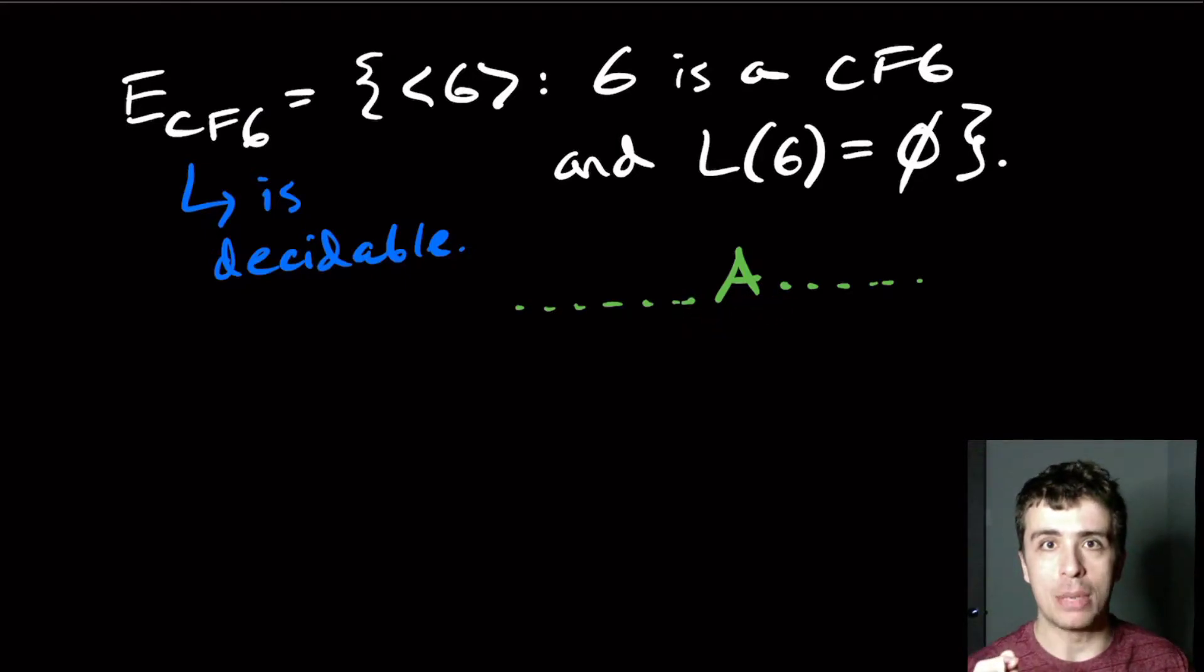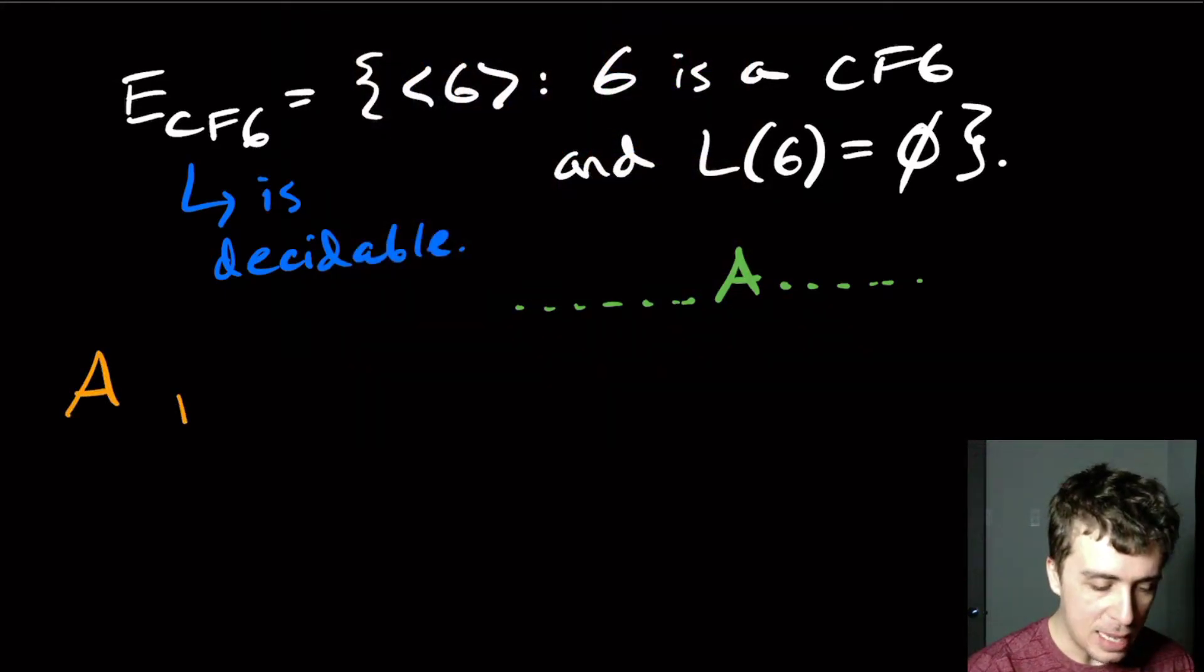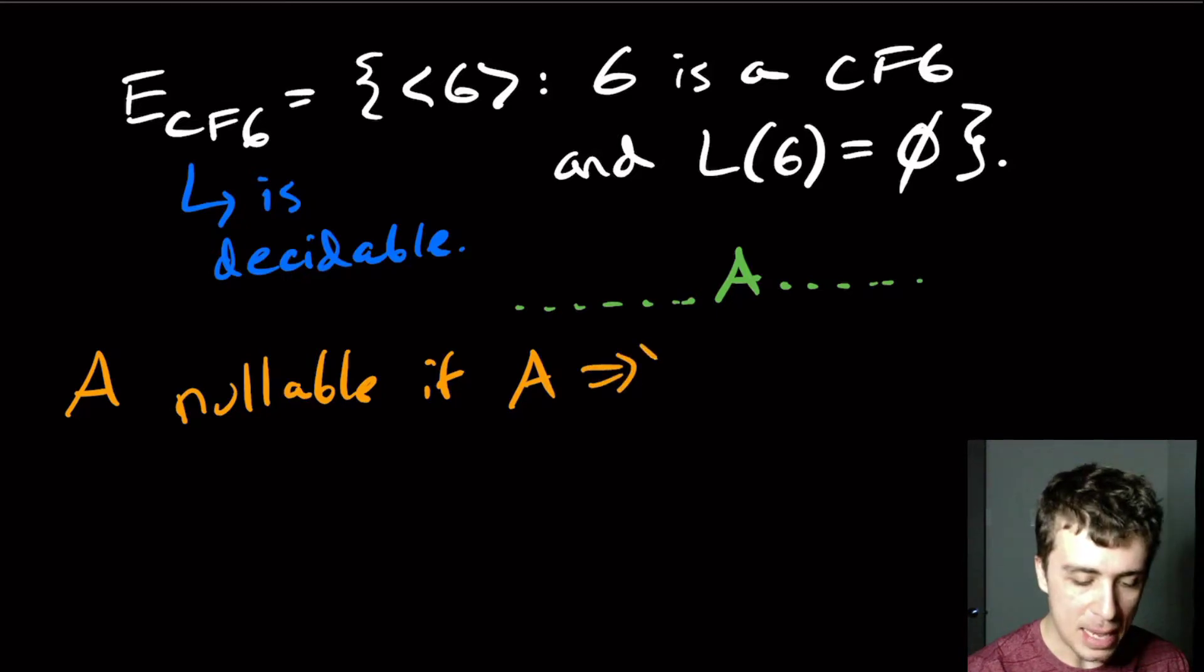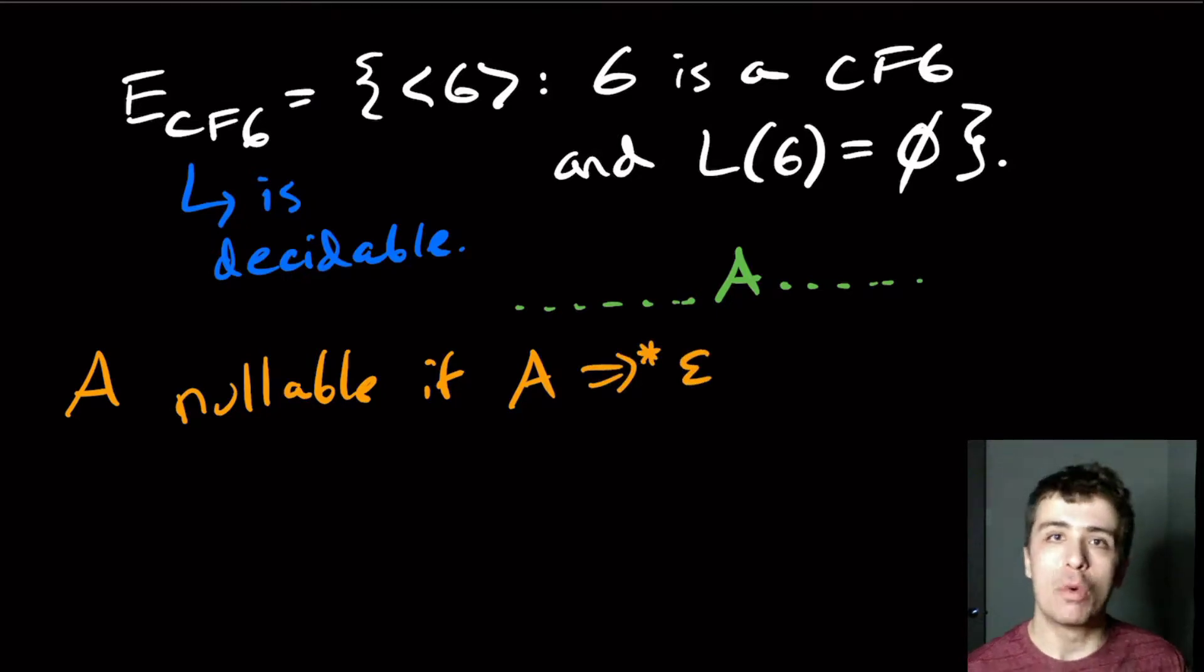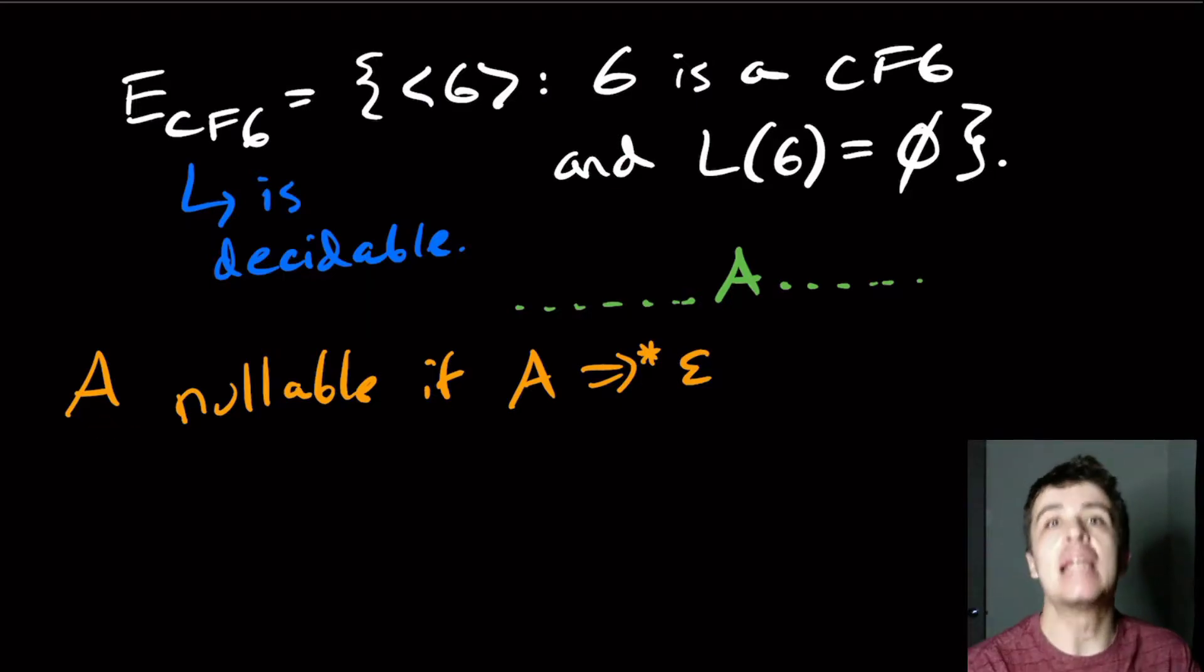So the way of actually approaching this is actually kind of similar to how we were able to get rid of epsilon rules in the Chomsky normal form conversion. And what we did there was we denoted a variable a as nullable if this a can make in some number of rules the empty string. We're actually going to do something very similar here. But instead of being nullable, we just want to know whether a variable could ever make any string at all,